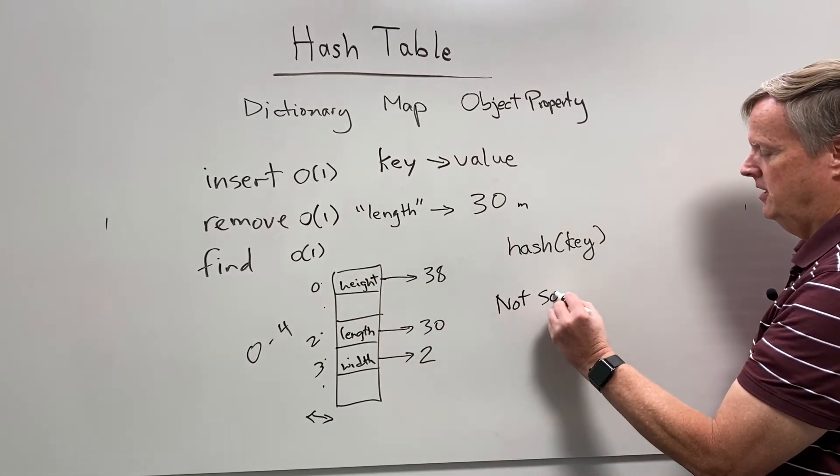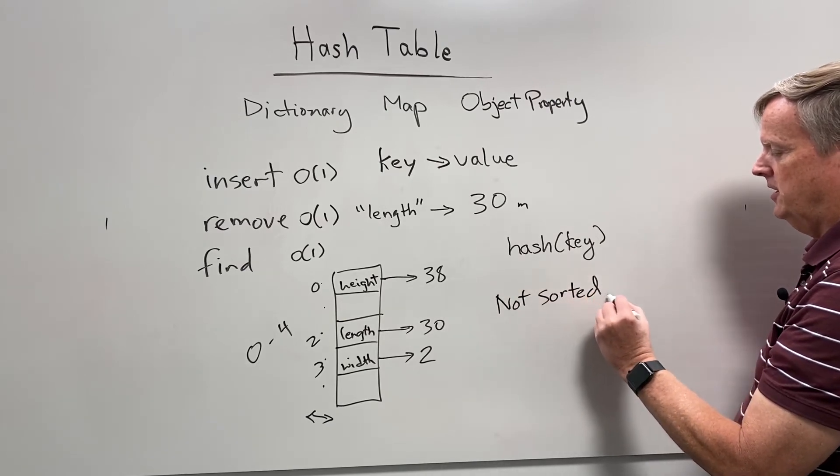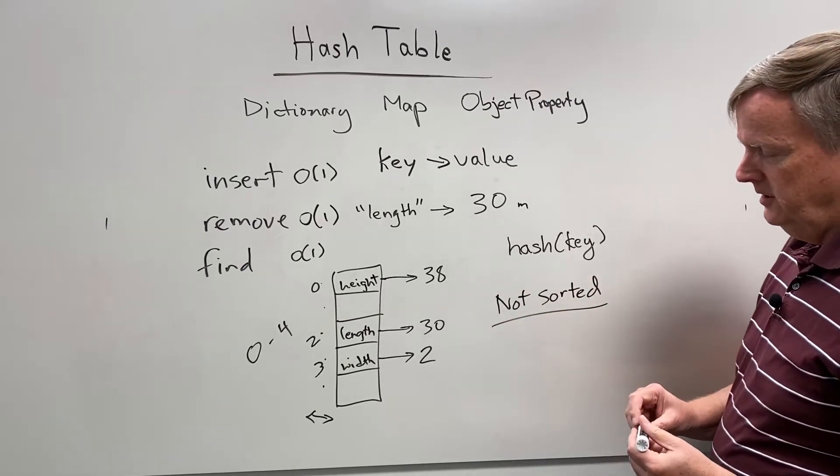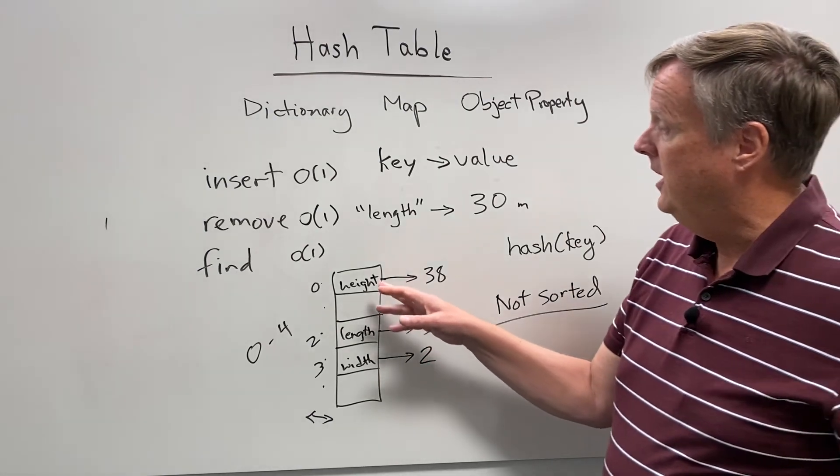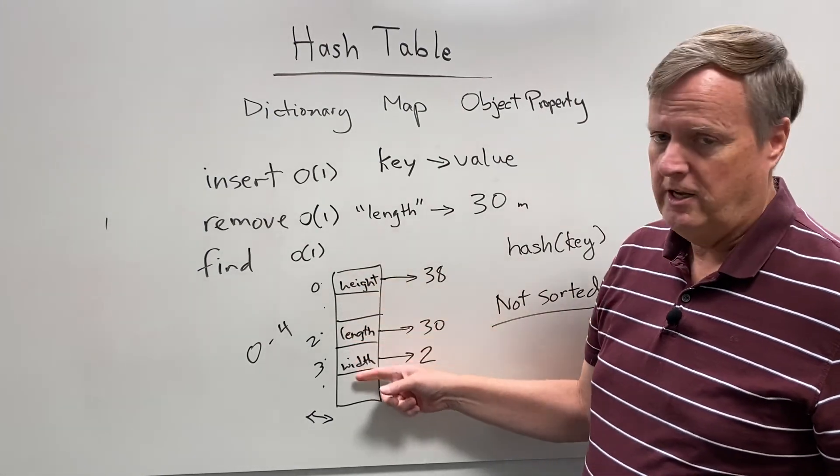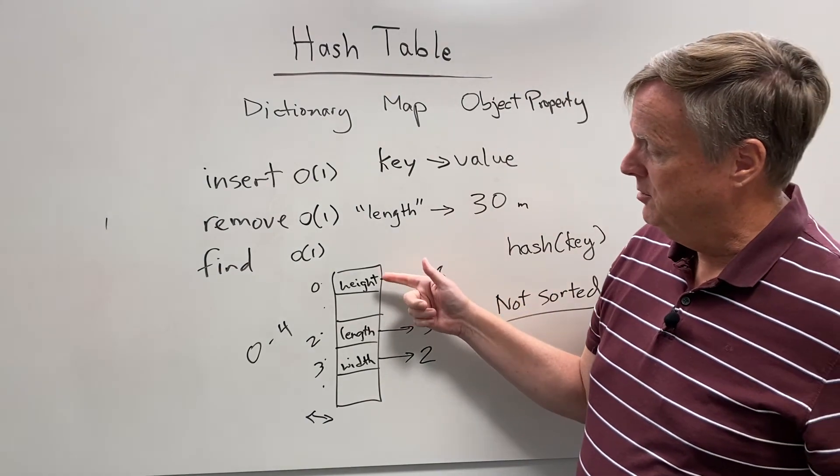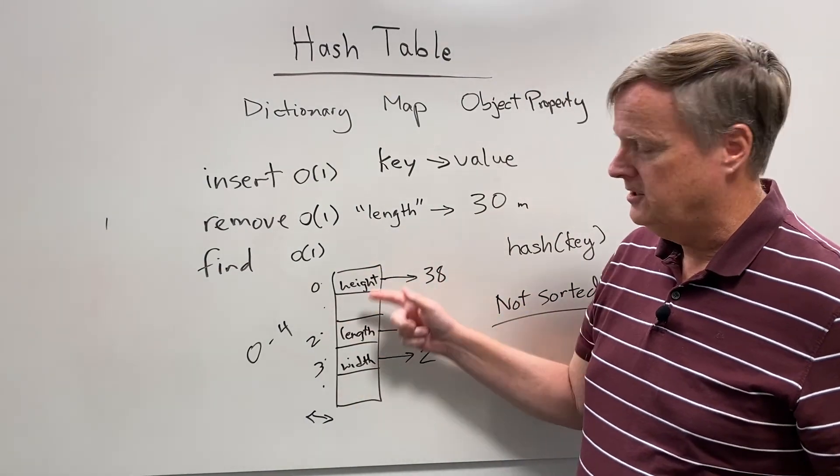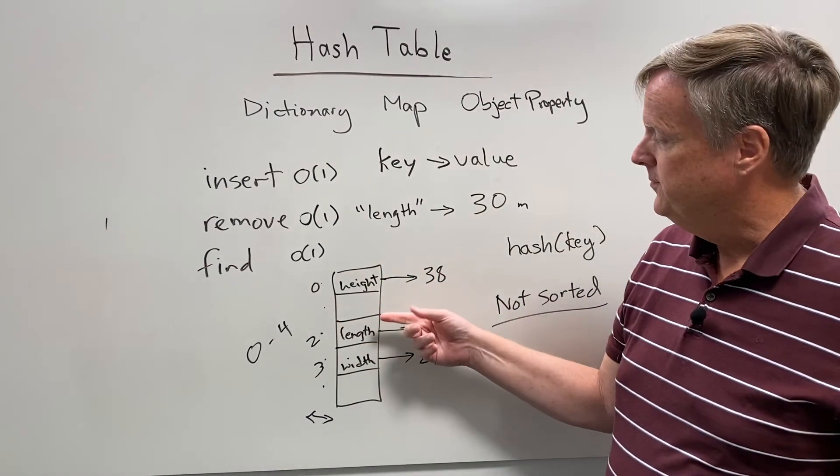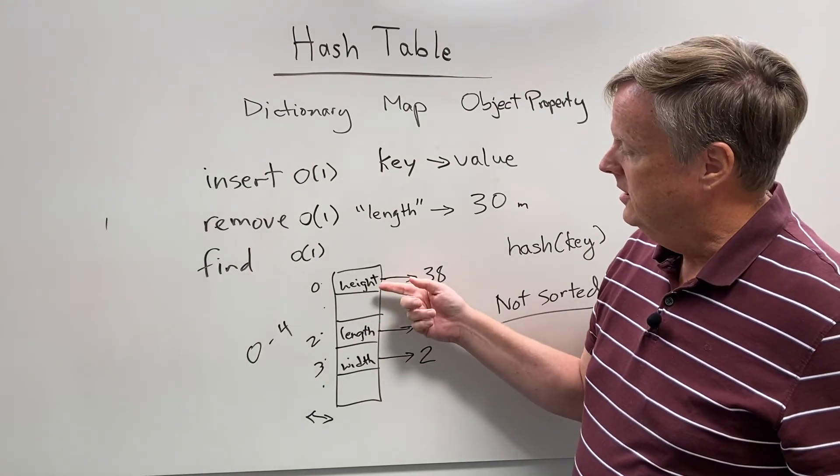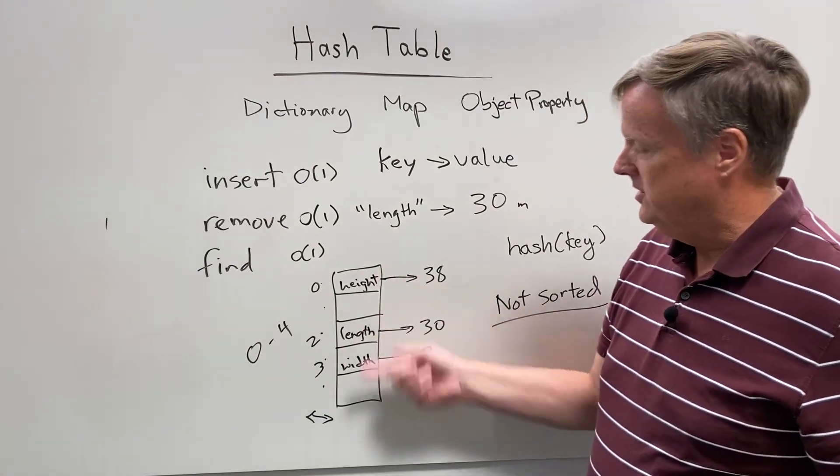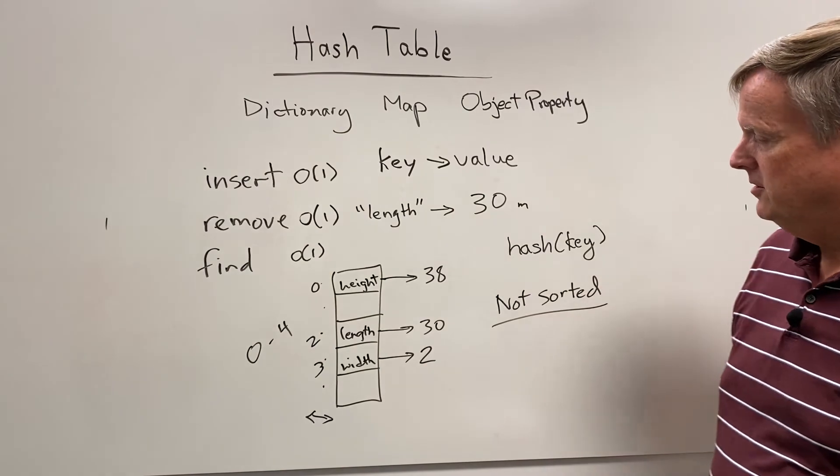They are not sorted. If you try to iterate through the keys in a hash table, they'll come out in random order. And in fact, most hash table implementations don't even give you operations for iterating them because it's kind of useless. I guess if you wanted to find everything that was in it, you could do that, but they'll come out in a random order.